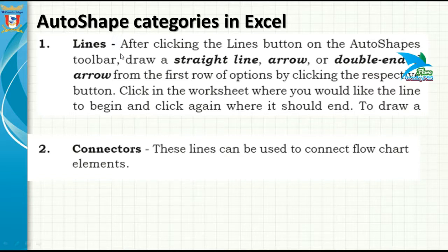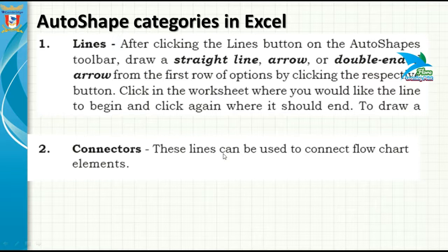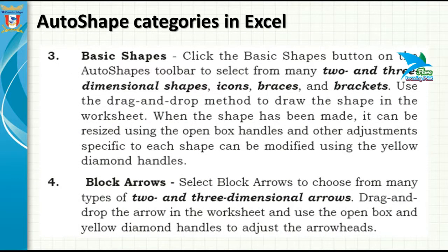Starting with Lines: after clicking the Line button, the auto shape toolbar lets you draw a straight line, an arrow, a double-ended arrow, or a curved line. Connectors — these lines can be used to connect flowchart boxes, so if you want to connect flowchart elements you can do this using the connectors option.